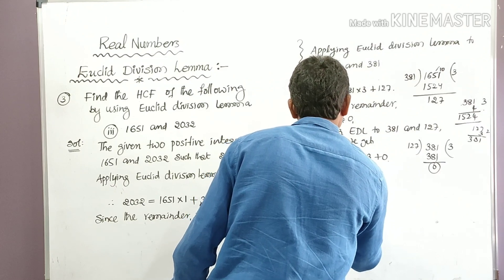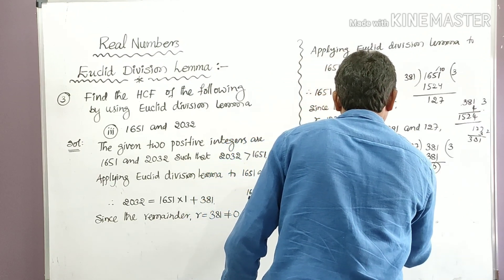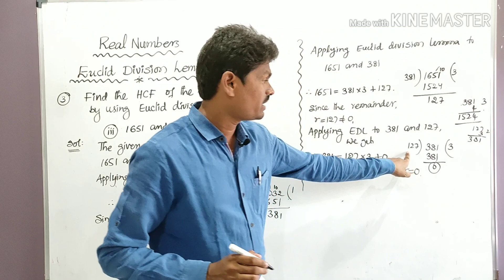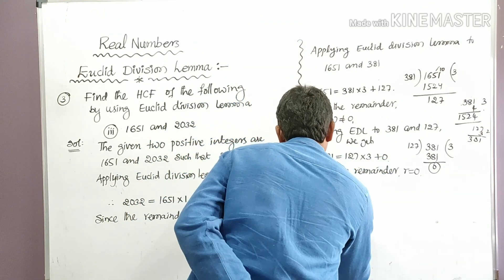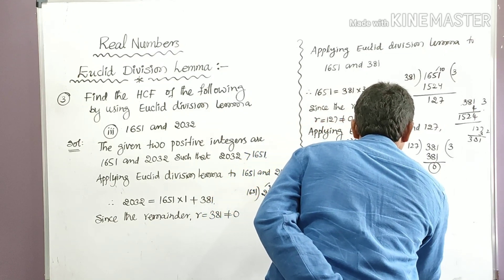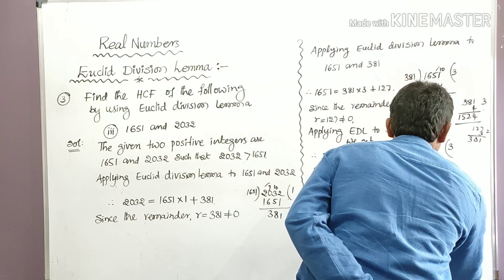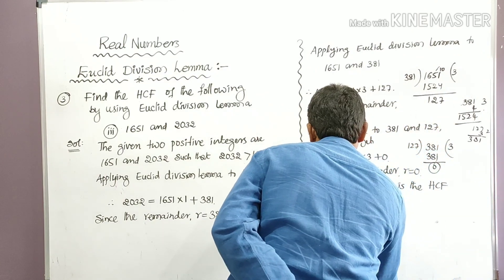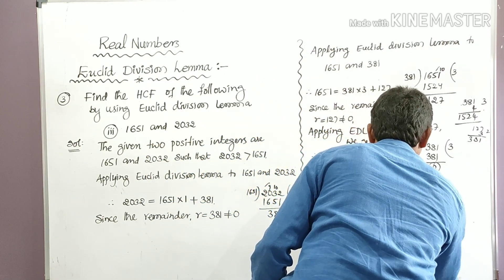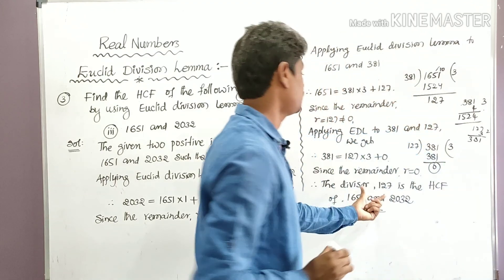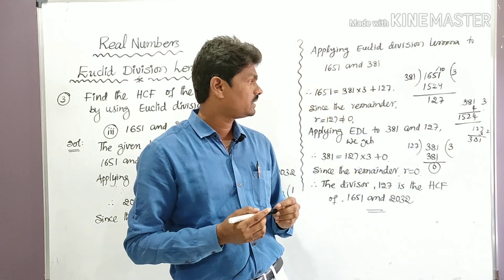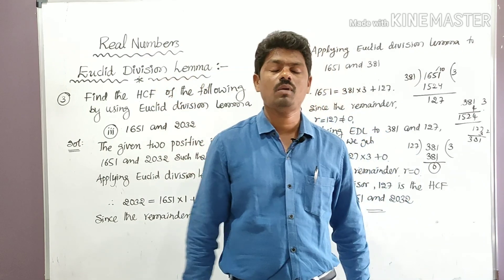Since the remainder r = 0, therefore the divisor 127 is the HCF. Therefore the HCF of 1651 and 2032 is 127. This is how we can find the HCF using Euclid's Division Lemma.